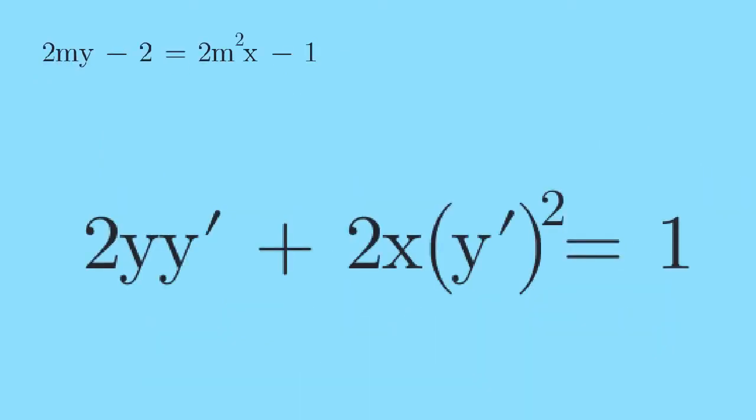This is the differential equation of the family of lines tangent to the parabola y squared equals 2x. To find a particular line and its equation, simply replace y prime by any real number except 0.